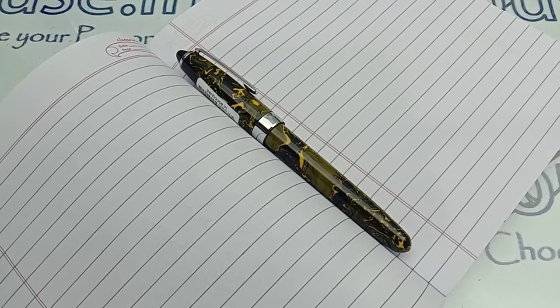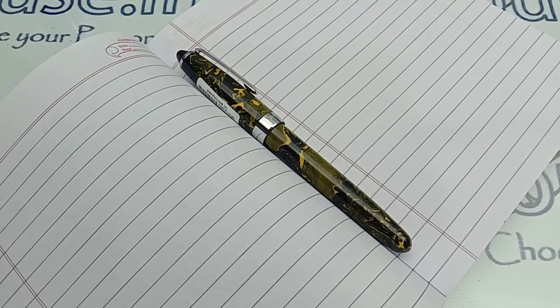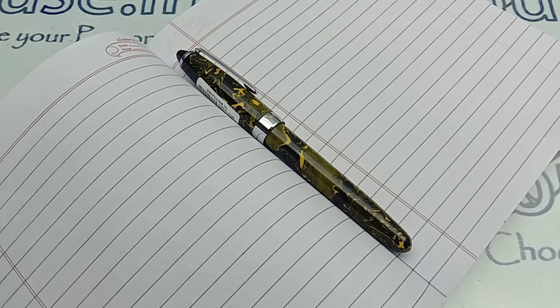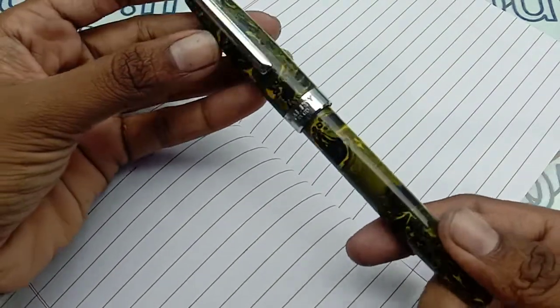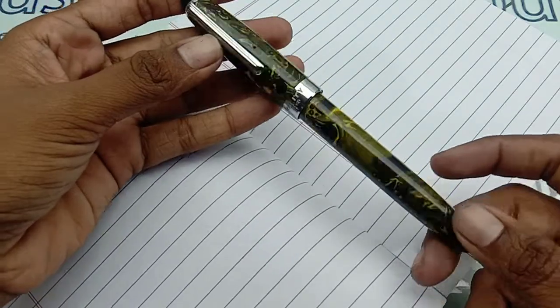Hello viewers, welcome to our channel. In today's video we're going to see a short review on Airmail Wality brand 69A model fountain pen. This one is a dark green with yellow and black marble finish.